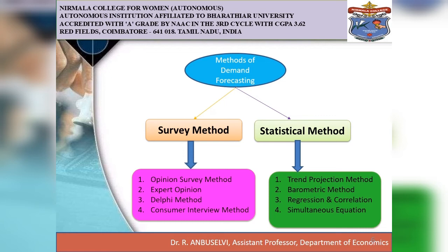The first is the trend projection method, otherwise known as time series analysis. A well-established firm would have accumulated data through past experiences. These data are analyzed to determine the nature of existing trends, then this trend is projected into the future and results are used as the basis for forecasting future demand. The second is the barometric method, under which present data are used to predict the direction of changes in the future with the help of economic and statistical indicators.